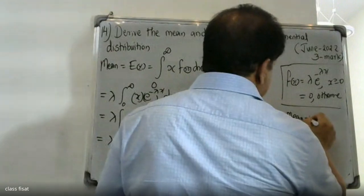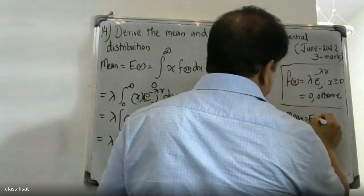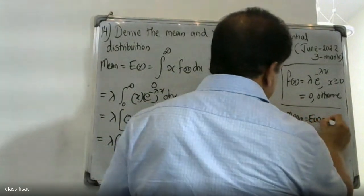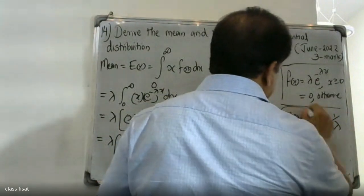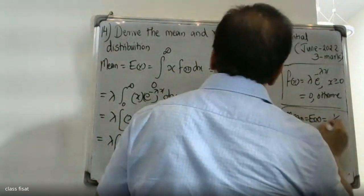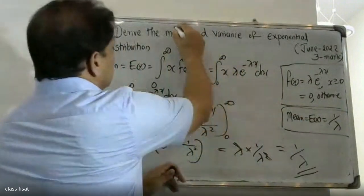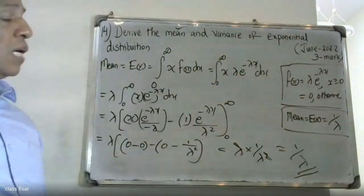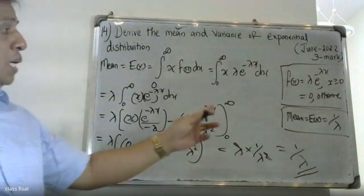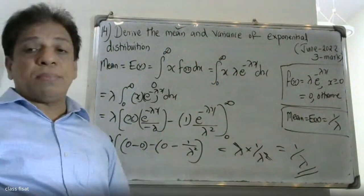Therefore, the mean — that is, expectation of x — is equal to 1 by lambda.